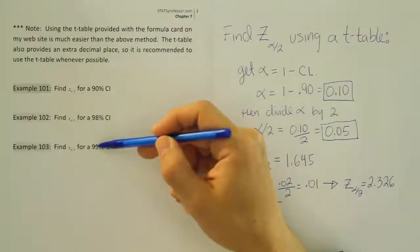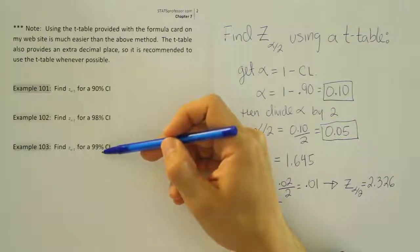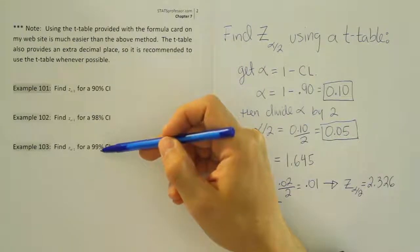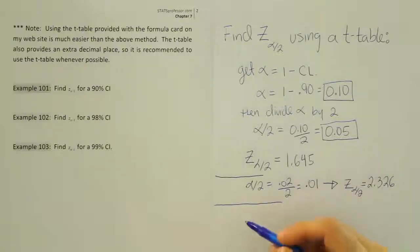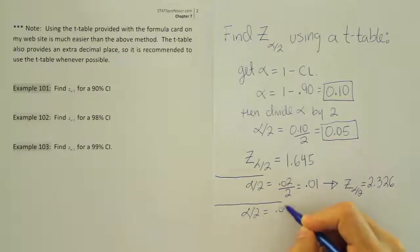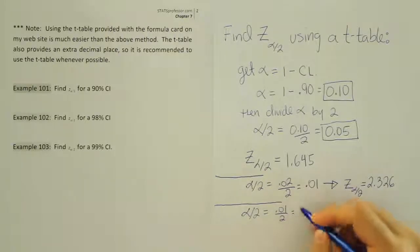From 100%, we take away that 99%, we come up with 1%. That must be alpha then. So alpha is 1%, but we always want alpha divided by 2 in these problems. So alpha divided by 2 here is 0.01 divided by 2, and as a decimal,